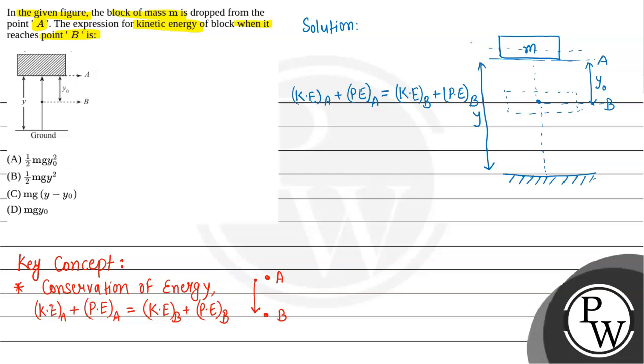In the first condition, when the block is at point A at rest, the kinetic energy at point A will be zero. The potential energy at point A equals mass multiplied by acceleration due to gravity multiplied by height.